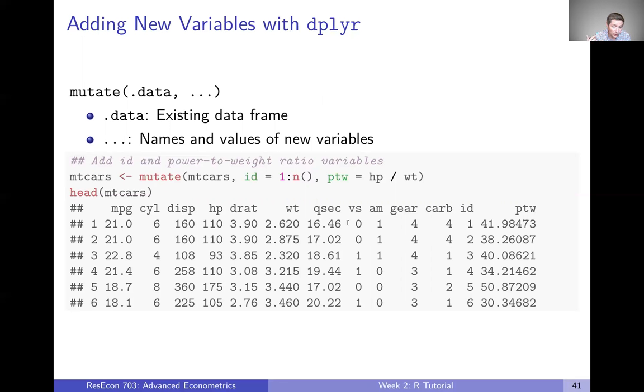Which I think this highlights one oftentimes good but sometimes annoying thing about R, which is there are always many ways to do something. We created id and power to weight ratio one way a couple slides ago, and now we're doing it a completely different way using mutate to get us to the same place. I think in a lot of cases that ends up being good, but in some cases it can be a little annoying. At this point, I think having the flexibility to do things multiple ways is probably a good thing for you.